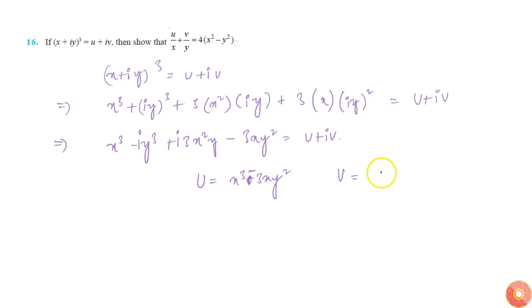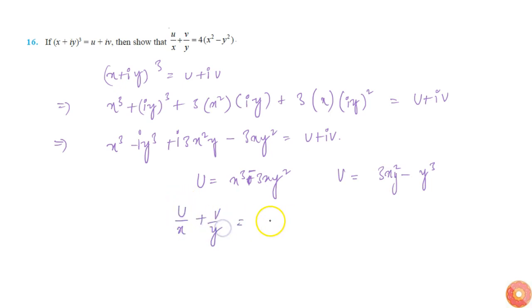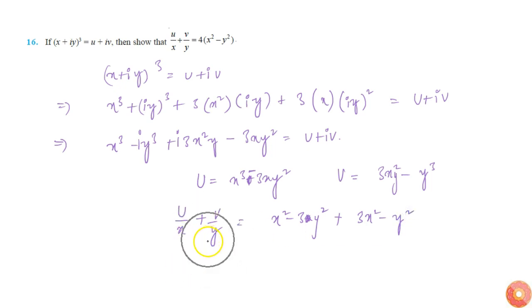From these expressions, u/x + v/y equals (x² − 3y²) + 3(x² − y²), which simplifies to 4(x² − y²). Thus we have proved the result.